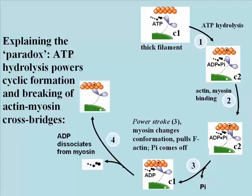In the next step, the ADP comes off. Why does it come off? Because when the head binds to the actin — where the myosin is back in its C1 conformation — that binding alters the conformation ever so slightly so that the ADP no longer wants to stick, and so it comes off.